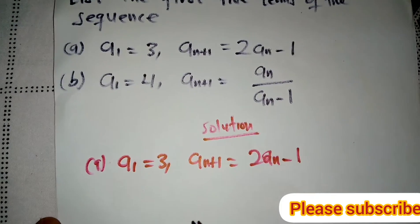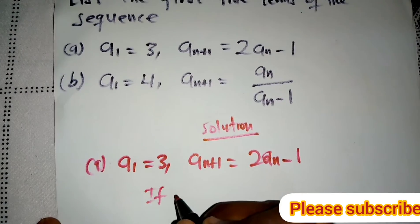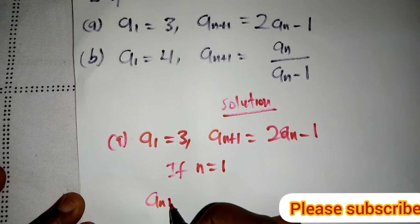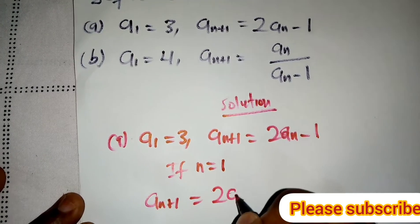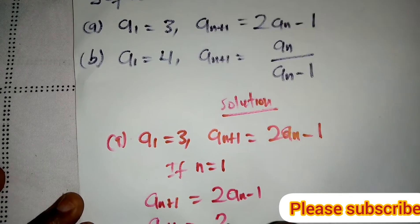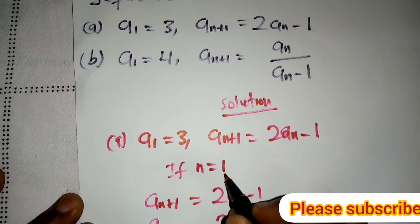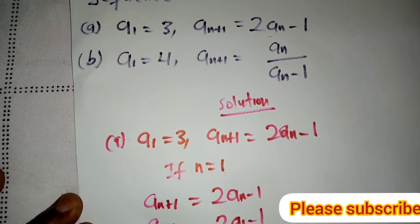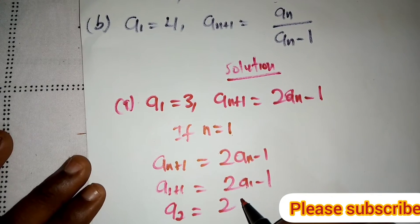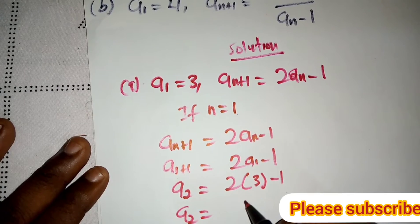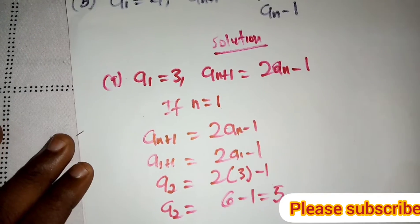So if n = 1, then with this term we have a(n+1) = 2*a(n) - 1. So a1+1 = 2*a1 - 1. Since a1 = 3, we insert it: a2 = 2(3) - 1 = 6 - 1 = 5. So a2 = 5.